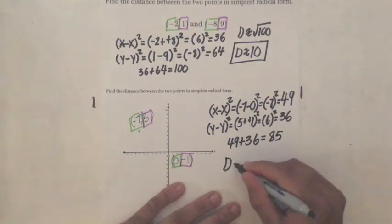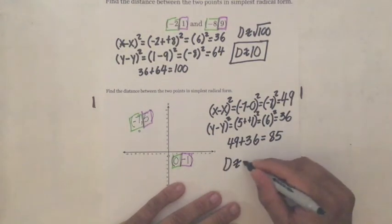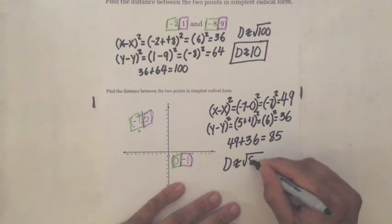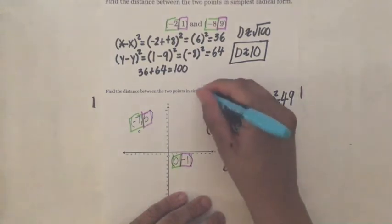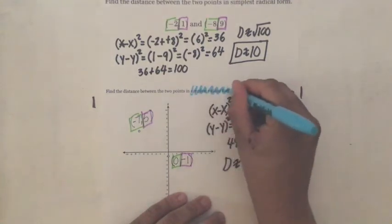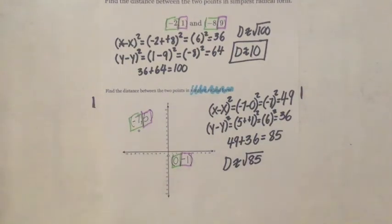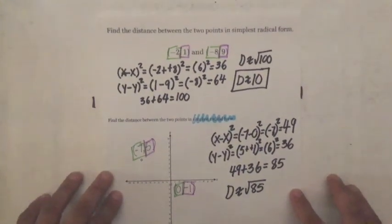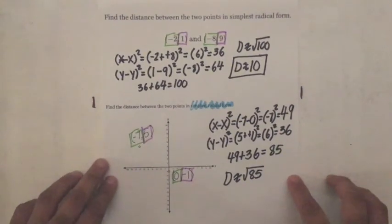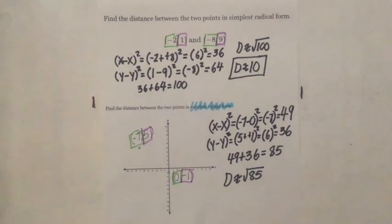Then my last step, distance is approximately the square root of 85. And it says in simplest radical form. So that means that I leave it as a radical and 85 cannot be reduced. So that is my answer. So as you can see here, these are two kinds of examples of finding the distance between two points in Delta Math.